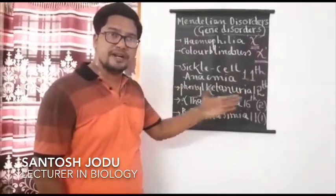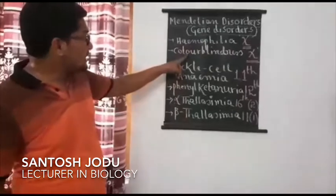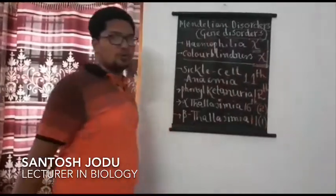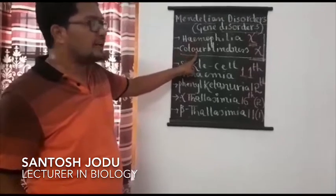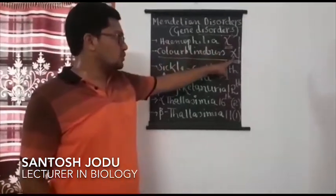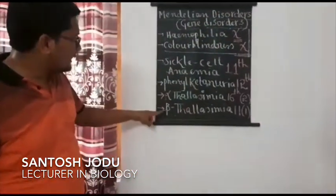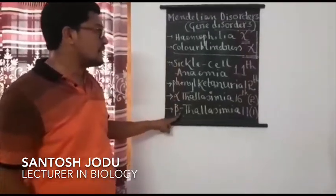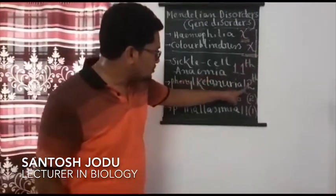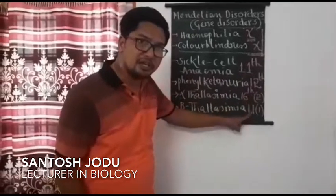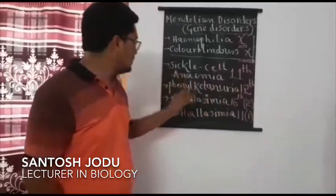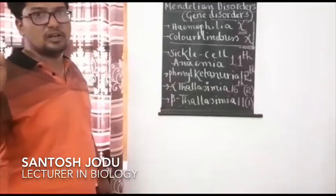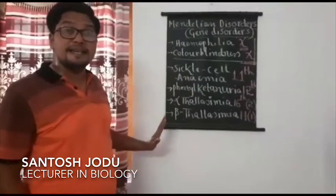Out of the five gene disorders, two are associated with sex chromosomes — hemophilia and color blindness, both on the X chromosome (23rd pair). The remaining three — sickle cell anemia, phenylketonuria, and thalassemia — have genes present on autosomes (11th, 12th, 16th, and 11th pairs respectively). So sickle cell anemia, phenylketonuria, and thalassemia are autosomal disorders, while hemophilia and color blindness are sex-linked disorders.